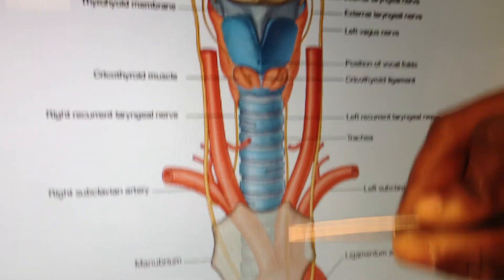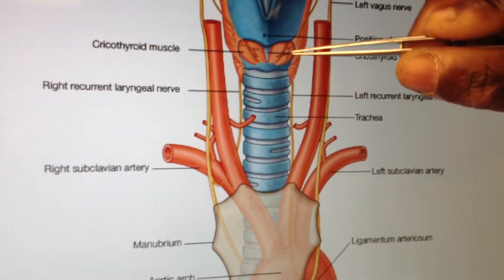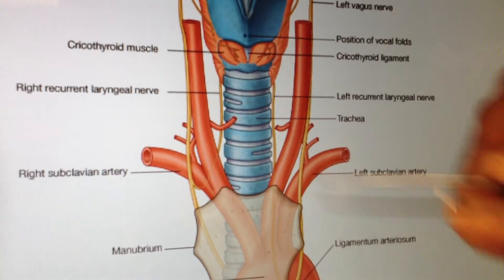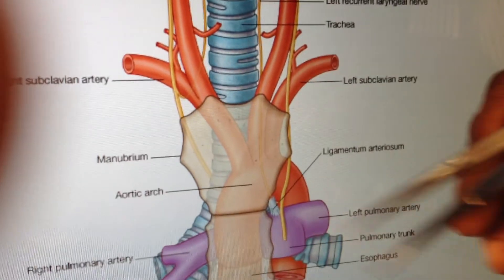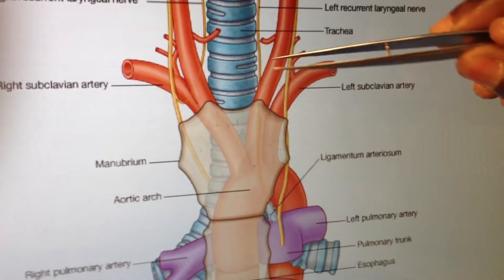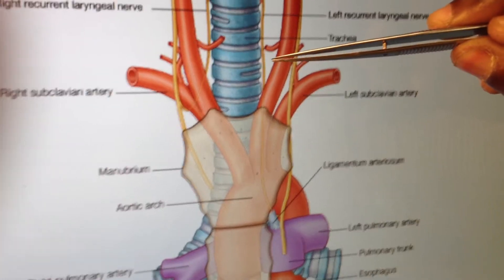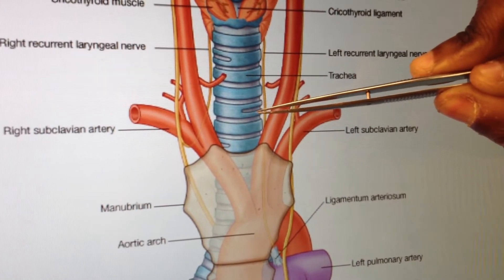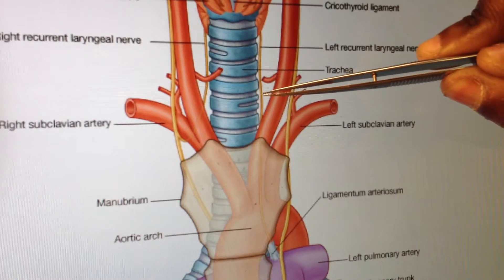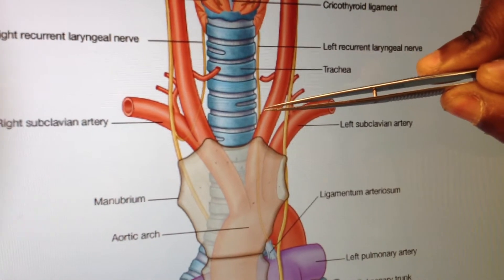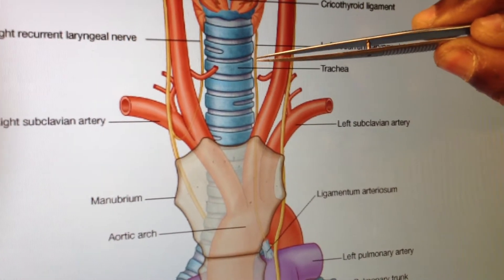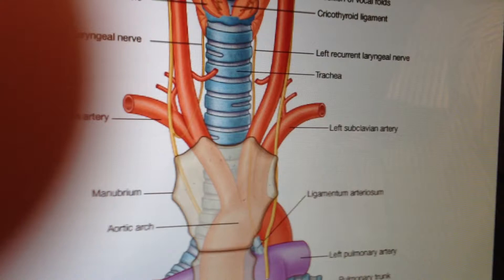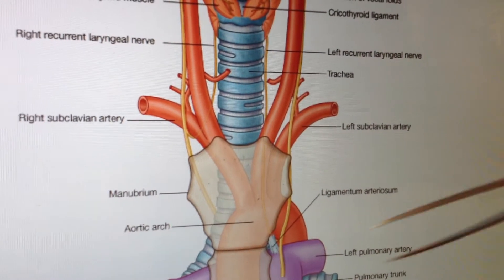They're turning around to go back up to supply the larynx - this is where your recurrent laryngeal comes from. And it runs up. If you look at it on the specimens, it normally runs up between the esophagus, which is behind the trachea, and the trachea - just running in tight there, heading up towards the larynx. So that's on the left-hand side.